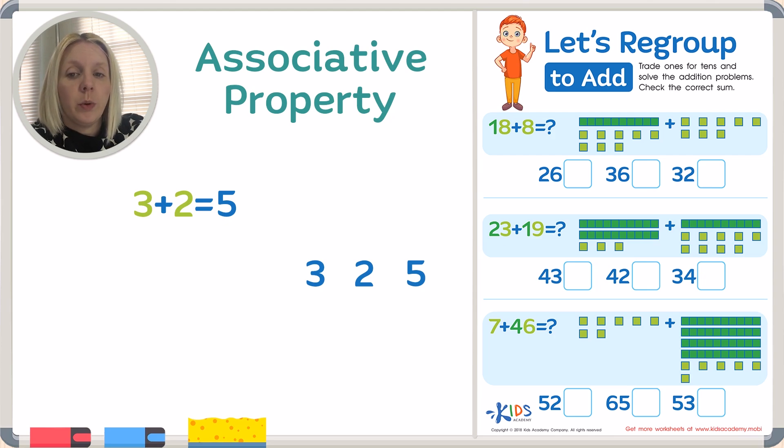For example, 3 plus 2 equals 5. I could switch them and say 2 plus 3, which also equals 5, right? And I could even make it into a subtraction problem. 5 minus 3 equals 2, and 5 minus 2 equals 3. This is the associative property. These three numbers always go together.